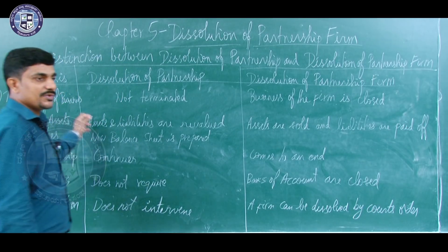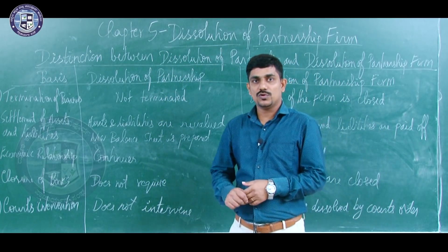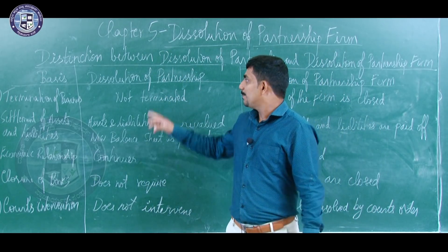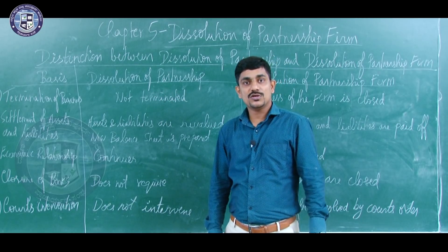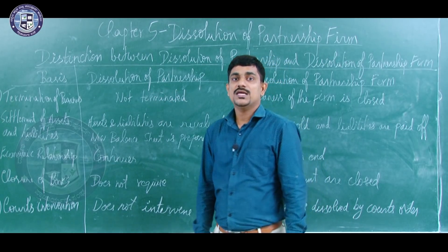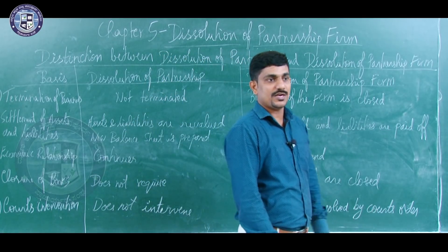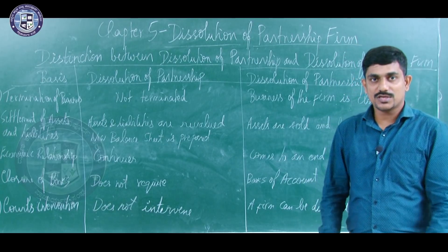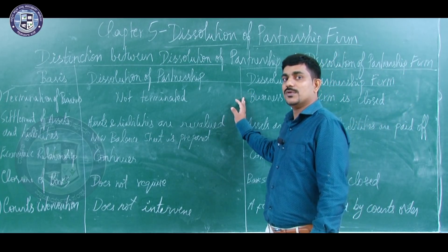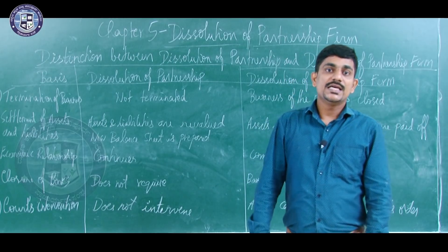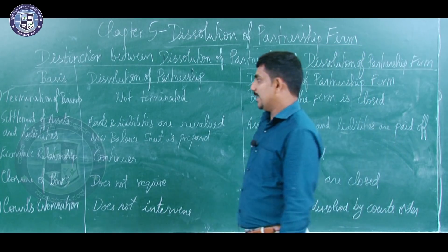The first difference is termination of the business — whether the business closes or not. In dissolution of partnership, the business does not come to an end; it continues. But in dissolution of partnership firm, the partnership business comes to an end, because dissolution of partnership firm is also called discontinuation of partnership. So the business comes to an end.